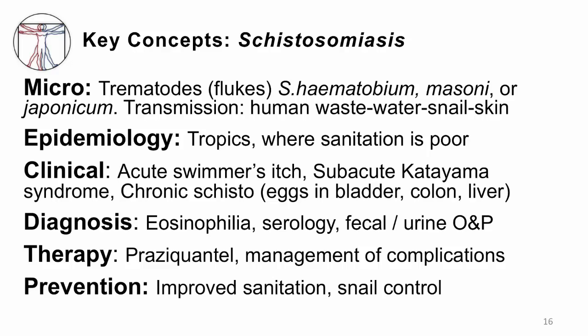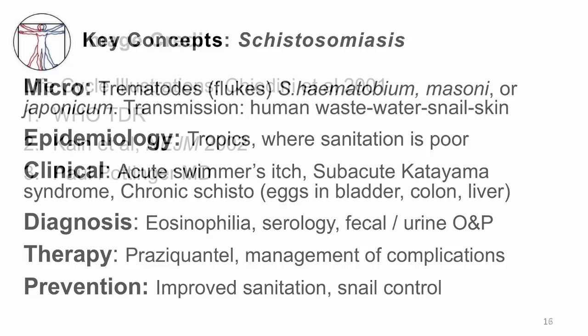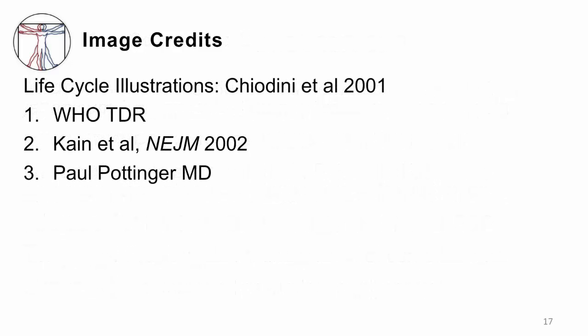The key concepts for schistosomiasis: it is a trematode of three different species, transmitted when human waste gets into water, then into snails, and finally into human skin. It happens throughout the tropics where sanitation is poor. Acutely there will be swimmer's itch; subacutely, a couple of months later, there's Katayama syndrome; and chronically it's all about eggs in your bladder, colon, and liver. Make a diagnosis by looking for eosinophilia, sending serology, and looking for eggs in feces or urine. Treat with praziquantel, manage complications especially liver complications carefully, and improve sanitation and snail control for prevention. Thank you for your attention.